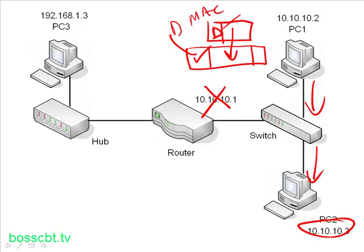PC2 goes ahead and processes that frame. So we looked at the routing process — straightforward because the destination is on the same subnet as the source, PC1 and PC2. We took a look at the encapsulation process, putting the IP packet into an Ethernet frame, and also the ARP process of figuring out the layer 2 MAC address based on the layer 3 IP address. That's the simple scenario. Now let's look at the scenario where we need to use the default gateway.